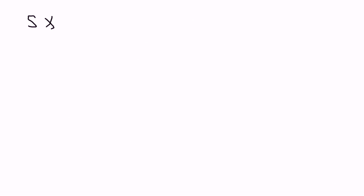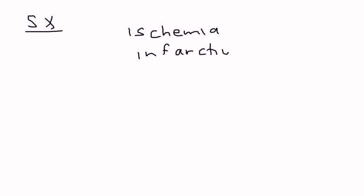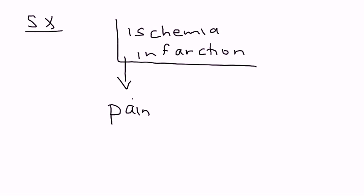Now let's move on to the signs and symptoms. If someone has sickle cell disease, what kind of symptoms will they present with? Instead of memorizing all the symptoms, let's try to understand what's actually happening. If the tissues are not receiving the proper blood flow, you'll have ischemia and eventually infarction. That leads to pain — in particular, it's called painful crises of sickle cell, and this is a very common presenting symptom that sickle cell patients have.